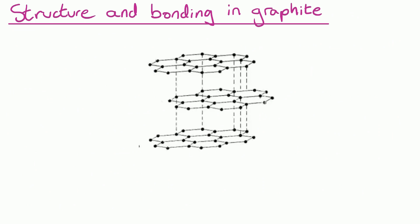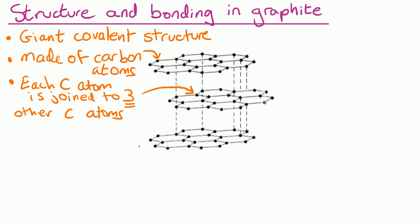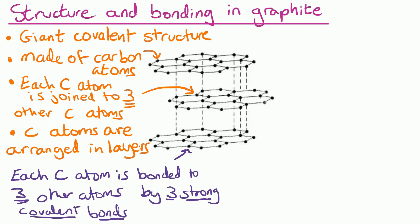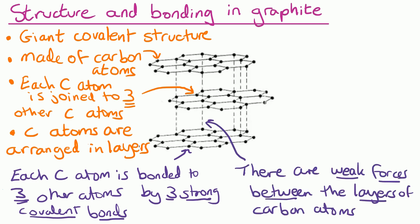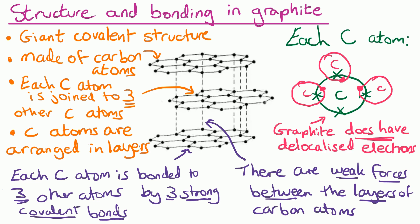We can see there are some similarities and differences with graphite. First of all, it's still a giant covalent structure — giant because there are lots and lots of atoms joined together, and covalent because we can see those sticks between the atoms. Still made of carbon atoms, exactly like in diamond, except they're rearranged differently. This time, each carbon atom is joined to three other carbon atoms, and the carbon atoms are arranged in definite layers. Each carbon atom is bonded to three others by three strong covalent bonds, but the layers themselves have only weak forces between them. Each carbon atom has four electrons in the outer shell, but this time it's only bonding with three of those electrons — so that fourth electron is what we call a delocalized electron, meaning it can move through the structure.